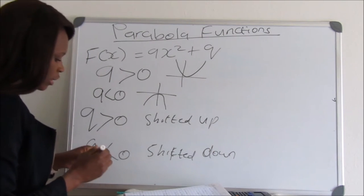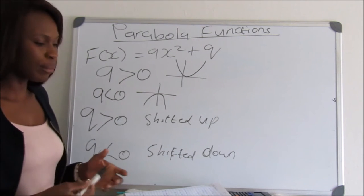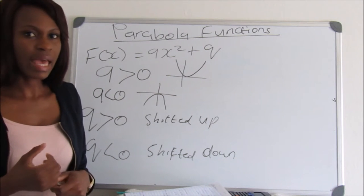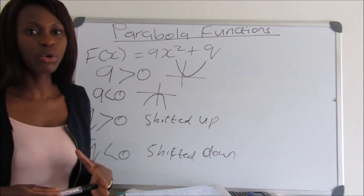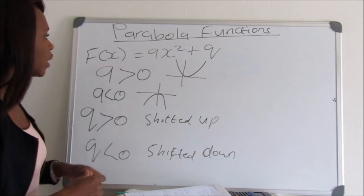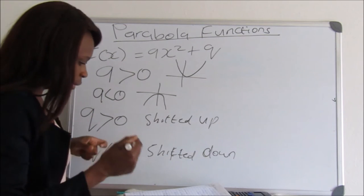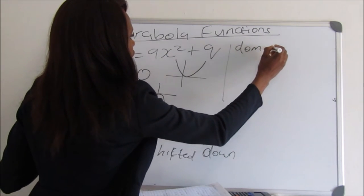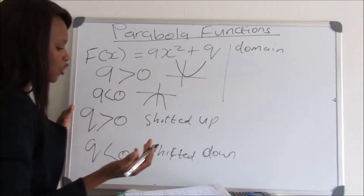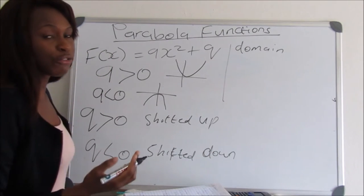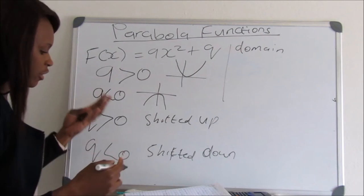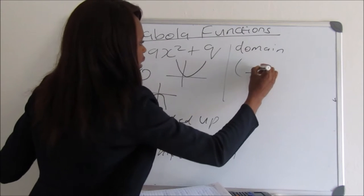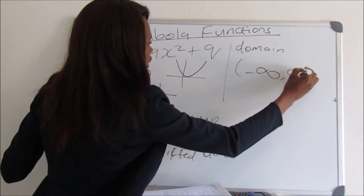The domain and the range of the graph: the domain refers to the possible x values for which the graph is defined, and the range is the possible y values. With the parabola graph, the domain in most cases starts from negative infinity and ends at positive infinity.